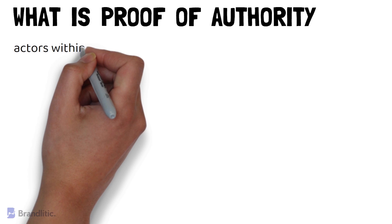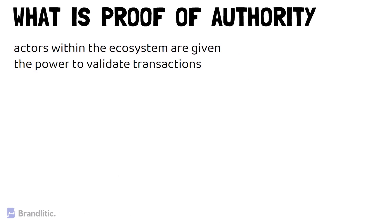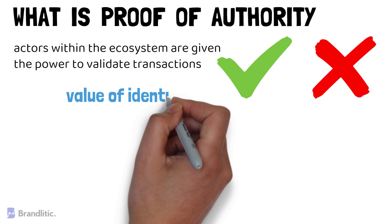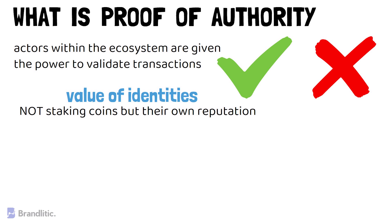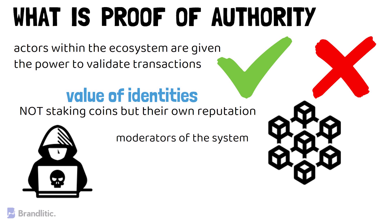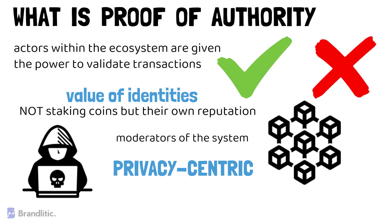Next, what is Proof-of-Authority? Proof-of-Authority is a consensus method in which a number of blockchain actors within the blockchain ecosystem are given the power to validate transactions and ultimately decide whether new blocks will be added to the blockchain or not. This consensus algorithm leverages the value of identities, meaning block validators are not staking coins but their own reputation instead. This model relies on a limited number of block validators, making it a highly scalable system. Blocks and transactions are verified by pre-approved participants who act as moderators of the system. However, a system running on Proof-of-Authority is not suitable for public blockchains as it may promote a monopoly, but it enables companies to maintain their privacy while availing the benefits of blockchain technology.